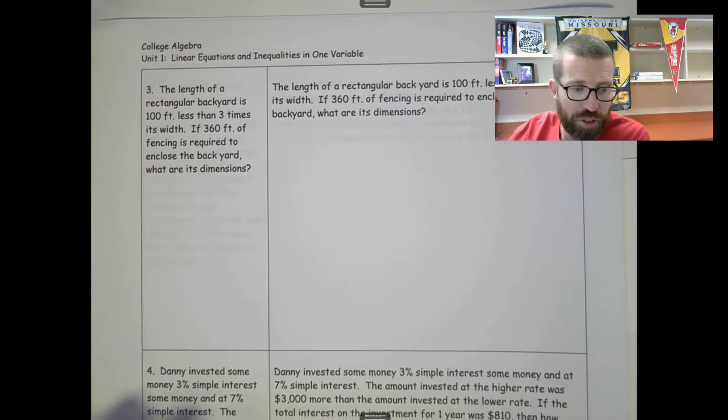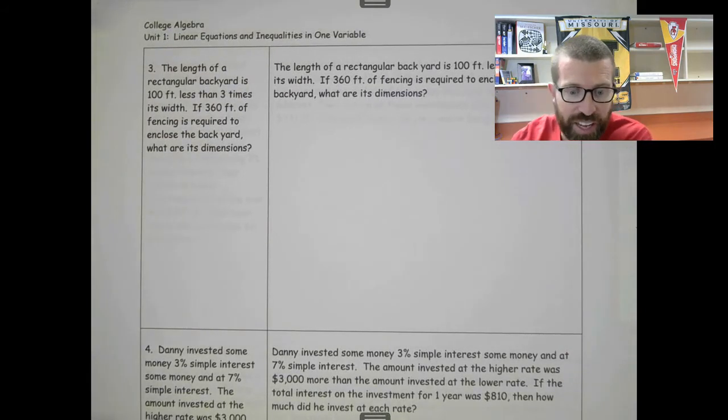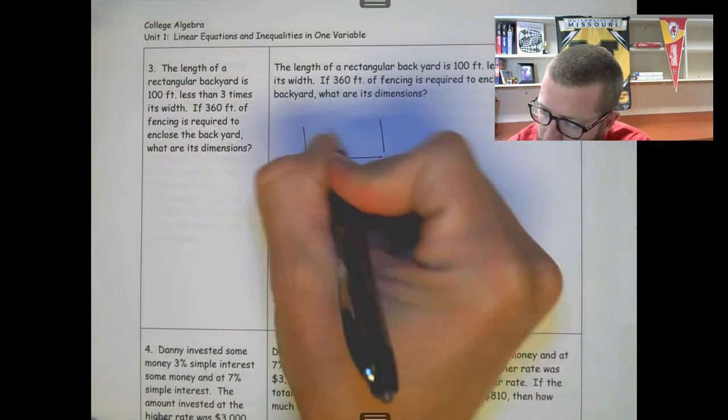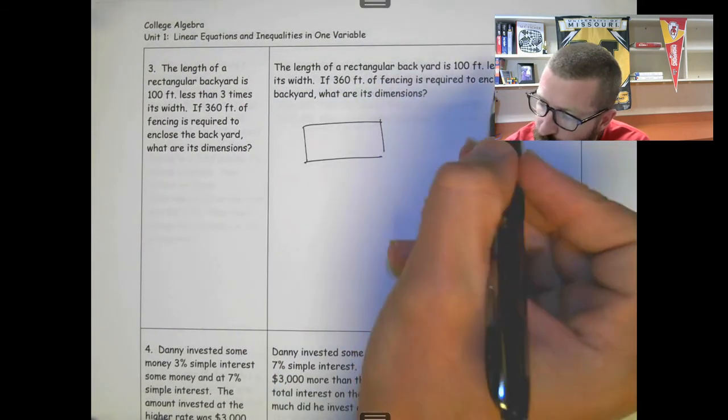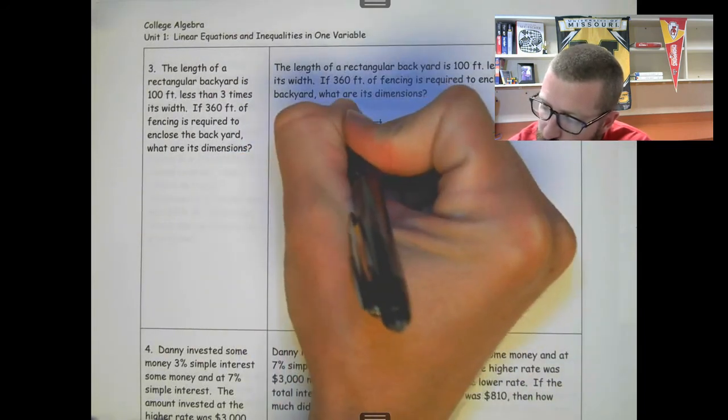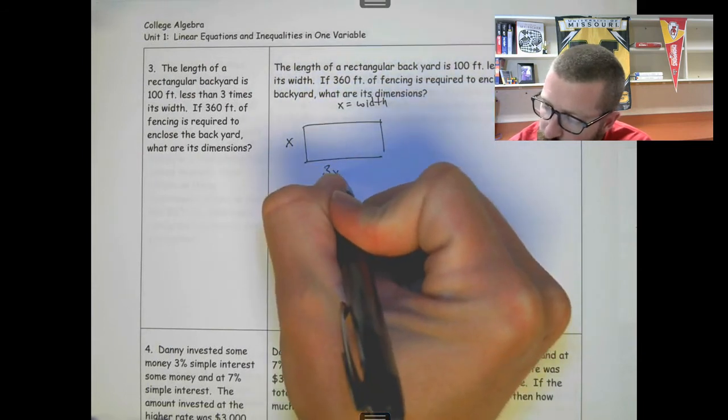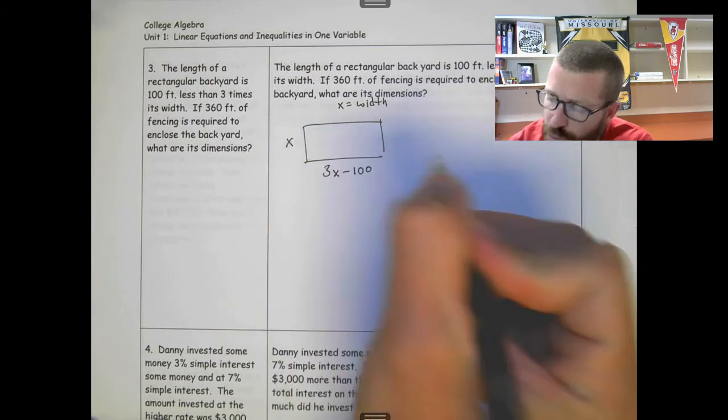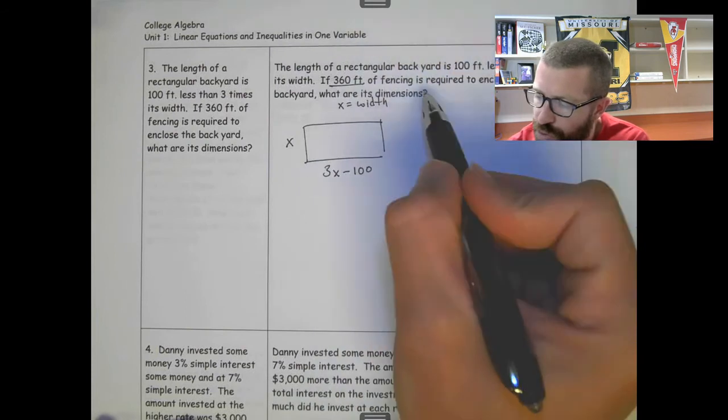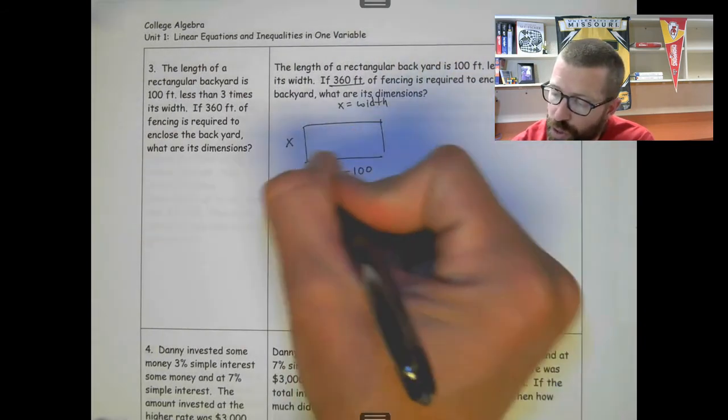This next one has to deal with a rectangle. The length of a rectangular backyard is 100 feet less than three times its width. Let's draw a picture. Let's say x is the width. 100 feet less than three times the width would be 3x minus 100. 360 feet of fencing is required to enclose the backyard, so that's all the way around, or you can think of perimeter as being 360.